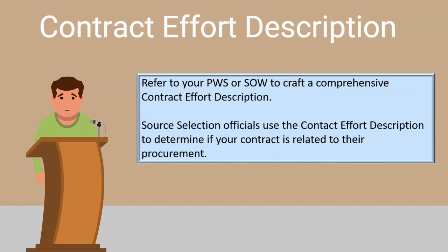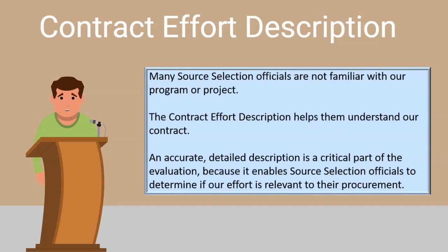The contract effort description is viewed by source selection officials throughout the entire federal government, not just the DOD. Many of these source selection officials may not be familiar with our program or project. Therefore, our contract effort description must be as descriptive as possible, so that those unfamiliar with our contract can still understand it. We should be sure to include detailed descriptions of key technologies, components, and subsystems, as well as the complexity of the contract or risk. We should also spell out any acronyms we use, as well as define any technical terms we discuss.